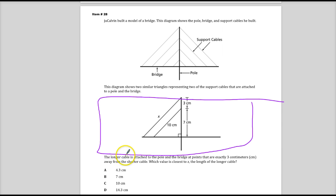The longer cable is attached to the pole and the bridge at points that are exactly 3 centimeters away from the shorter cable, which value is closest to X, the length of the longer cable. Now if you've seen anything where I've talked about the 2, 3, 4th situation, analysis of a problem, this is what this is going to be. But there is a little bit of an extra component to it.